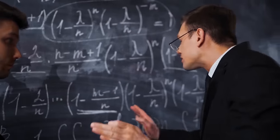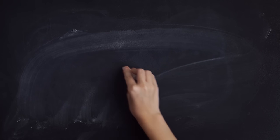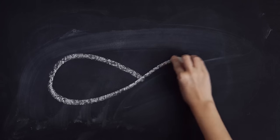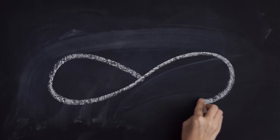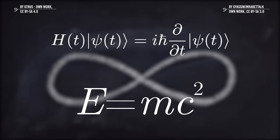In fact, physics is no more physics if it can't describe reality. The desire to resolve inconsistencies between observed phenomena and classical theory led to two major revolutions in physics that created a shift in the original scientific paradigm: the theory of relativity and the development of quantum mechanics.